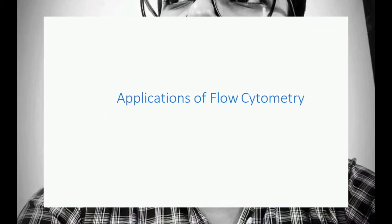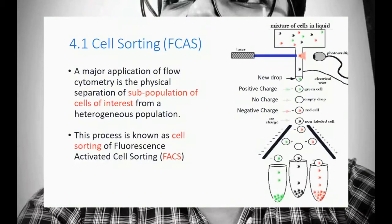Let's see the applications of flow cytometry. The first application is cell sorting. A major application of flow cytometry is the physical separation of a subpopulation of cells of interest from a heterogeneous population. As you can see in the picture, the green, black, and red represent different types of cells. These different categories of cells are separated by the charge on them.